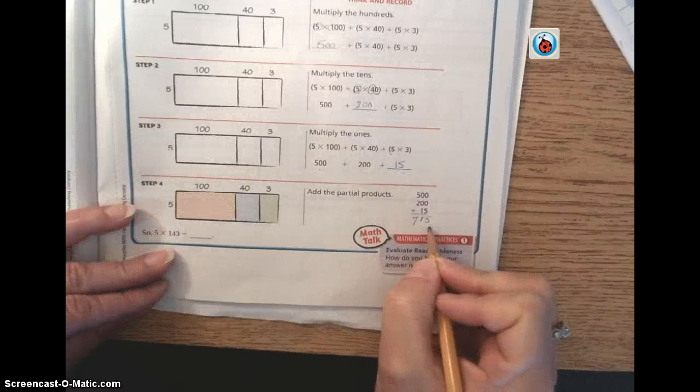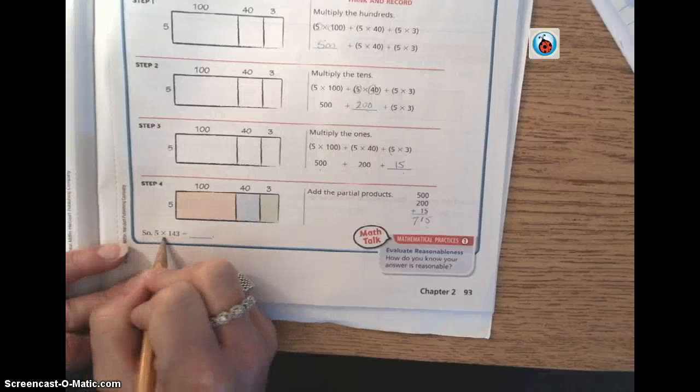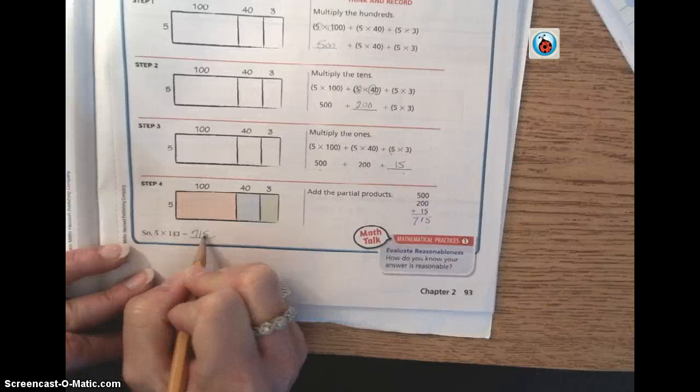So our answer would be 715. So we know that 5 times 143 is 715.